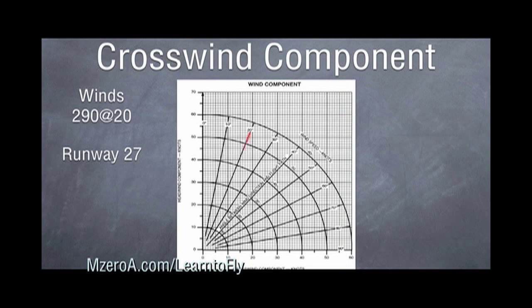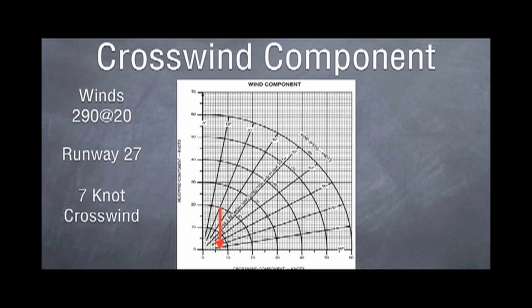From there we'll take that 20 degree line straight down to the 20 knot wind arc, which you can see is right where the arrow stopped. After finding the 20 knot arc, we take that straight down to the bottom of our chart and land on 7. That tells us we have a 7 knot crosswind today.